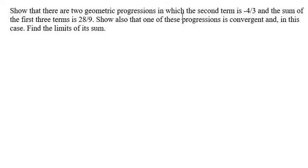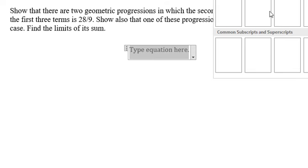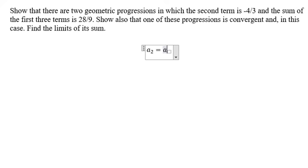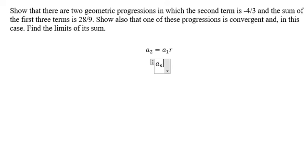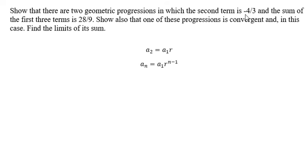We need to concentrate on the second term, which is negative 4 over 3. For geometric progressions, we have a2 equals a1 multiplied by r, because the formula is a_n equals a1 multiplied by r to the power of n minus 1. Since we are looking at the second term, n equals 2, and we put negative 4 over 3 here.